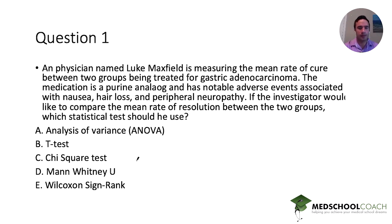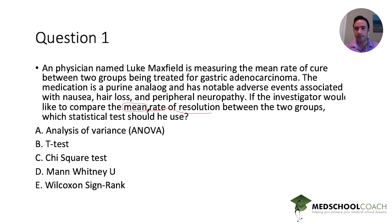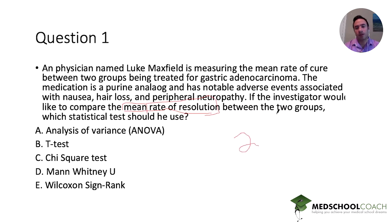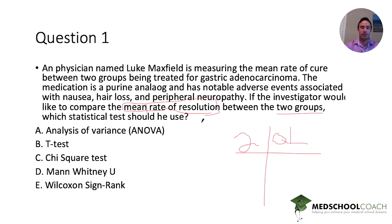Back to our question. The variable being measured is the mean rate of resolution. That can be confusing because of the word 'mean' — when you think of averages, you think of a numerical value. But here we're looking at the average rate of resolution, which either resolves or it doesn't. So we have two key points: one, we have two groups; and two, we have qualitative or categorical data, because the resolution rate is either resolved or not when recording the data.